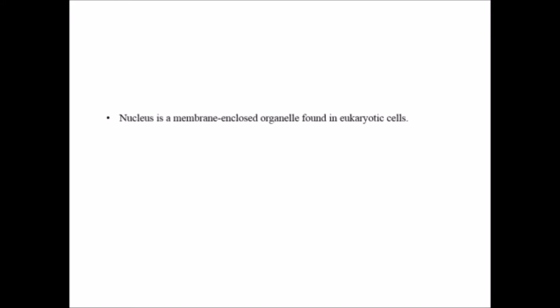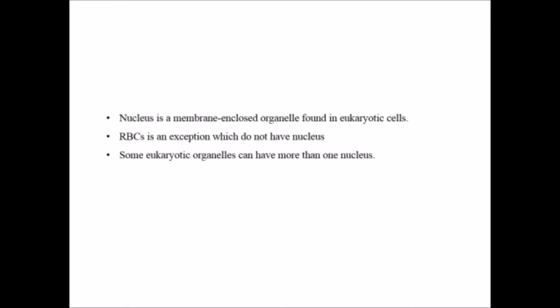Nucleus is a membrane-enclosed organelle found in eukaryotic cells. RBCs are an exception — they do not have a nucleus. When RBCs are newly synthesized they contain a nucleus, but on maturation it is lost. This is helpful for their oxygen-carrying capacity, as it increases the space for this activity. Some eukaryotic cells can have more than one nucleus.